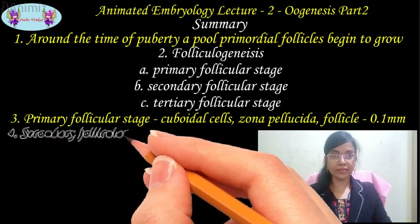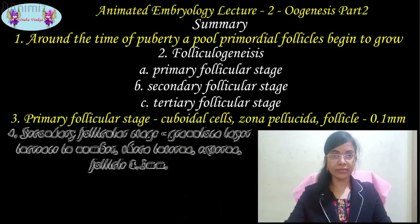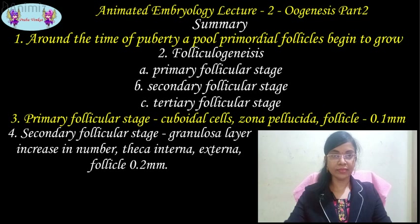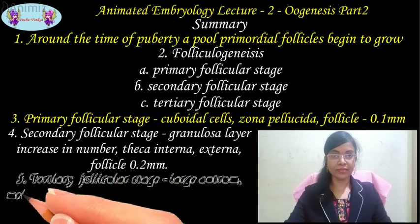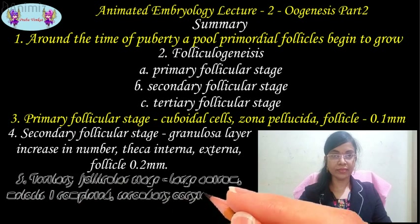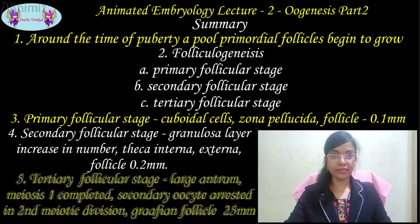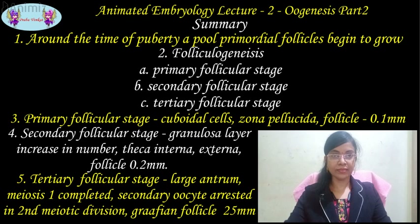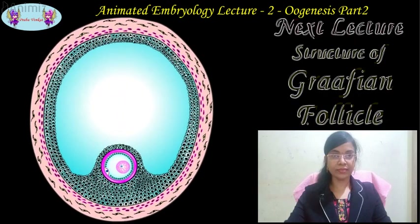In the secondary follicle stage, the granulosa layer increases in number, the theca interna and externa are established, and the follicle is around 0.2 mm in diameter. In the tertiary follicle stage, the antrum increases in size and attains its maximum, the granulosa cells are divided into four subgroups, meiosis 1 is completed leading to the formation of the secondary oocyte and the first polar body, and the secondary oocyte gets arrested in the metaphase of the second meiotic division. At last, the large tertiary follicle is called the Graafian follicle. In the next session, I will discuss about the structure of a Graafian follicle. Till then, bye.